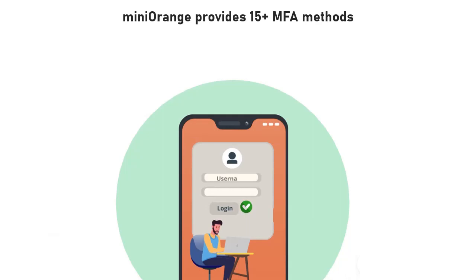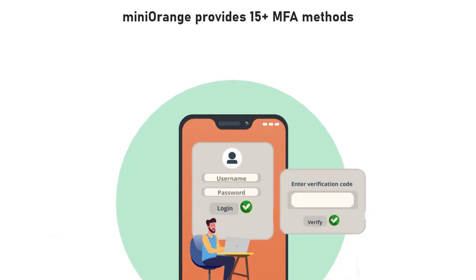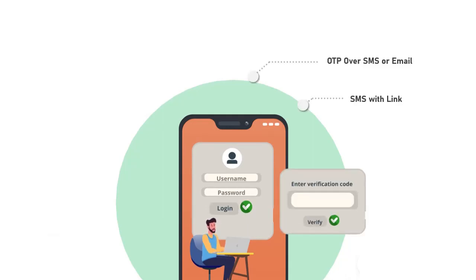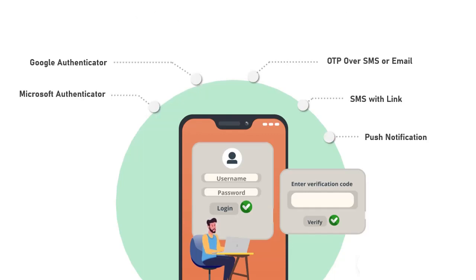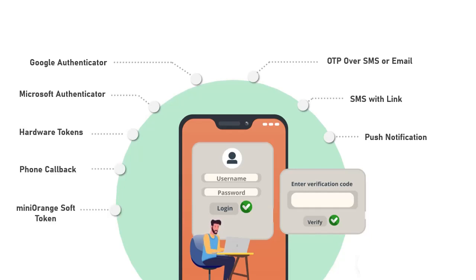Mini Orange provides 15 plus MFA methods like OTP over SMS or email, SMS with link, push notifications, Google Authenticator, Microsoft Authenticator, hardware tokens, phone callback, Mini Orange soft token, and many more.